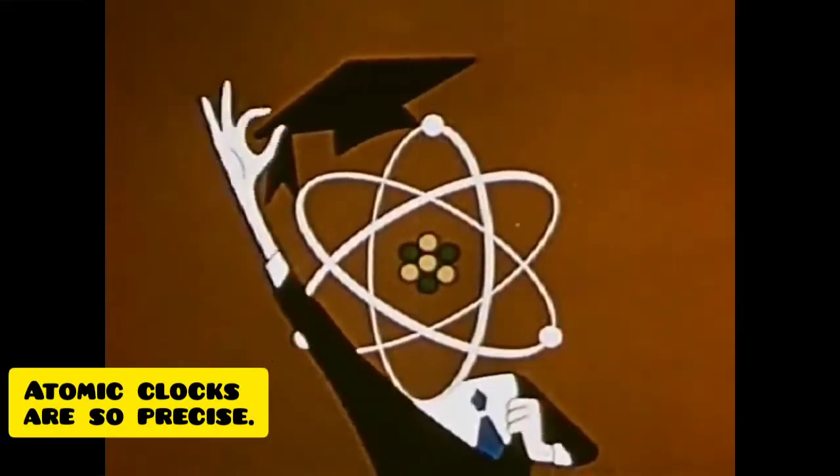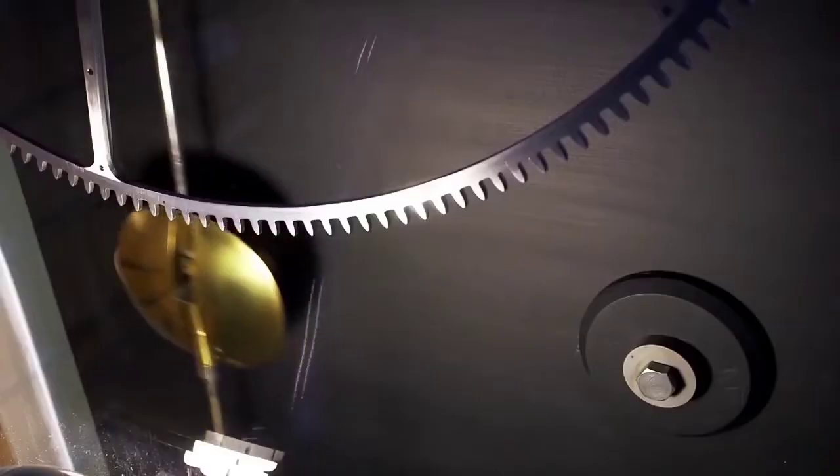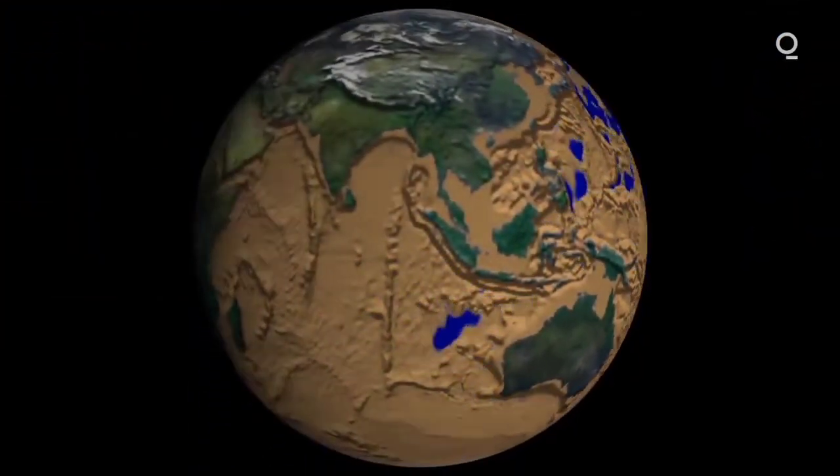Atomic clocks are so precise. Atomic clocks keep time better than any other clock. They even keep time better than the rotation of the earth and the movement of the stars.